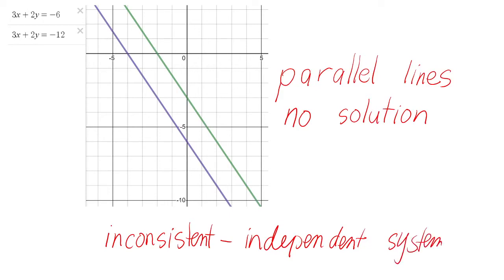Since there is no common point, therefore there is no solution for this. This is what you call an inconsistent, independent system. Some books use only 'inconsistent' because when you say inconsistent, it's automatically independent. When you say inconsistent system, the graph will be parallel lines and there is no solution at all.